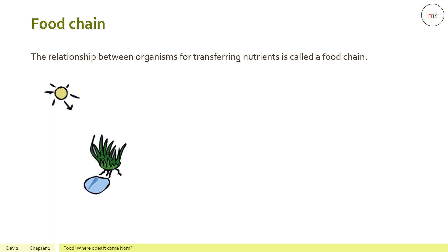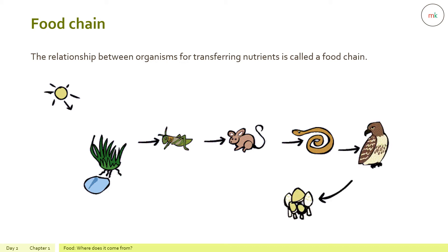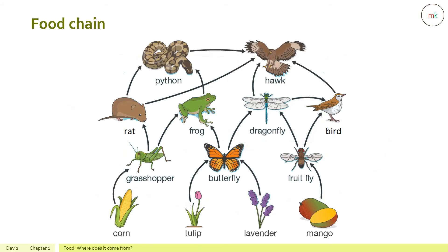The Sun is the source of energy, and plants take energy from the Sun to grow. Plants are eaten by a locust or cricket, which in turn can be eaten by a rat. The rat can be eaten by a snake, and the snake can be eaten by an eagle. When the eagle dies, the nutrients are returned to the soil.